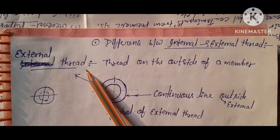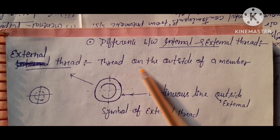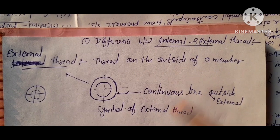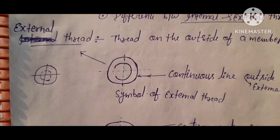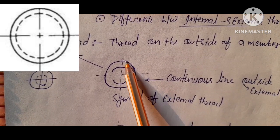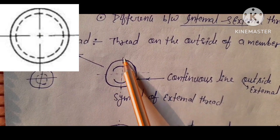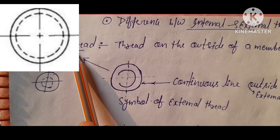External thread is cutted on outside of a member. External thread, thread cutted on outside of a member. And its symbol is here. This outside continuous line shows external thread.